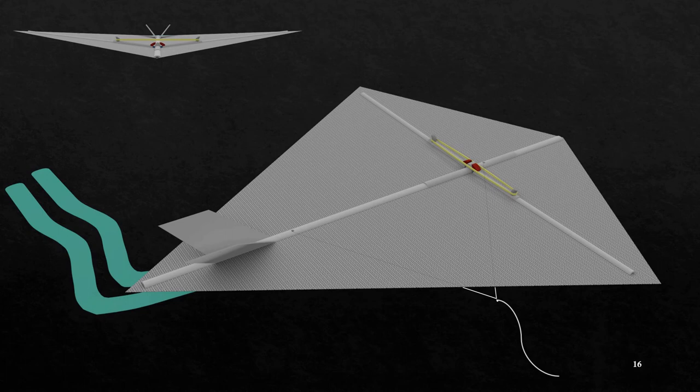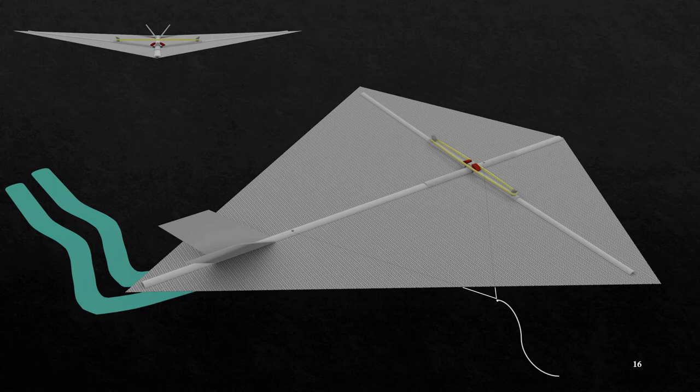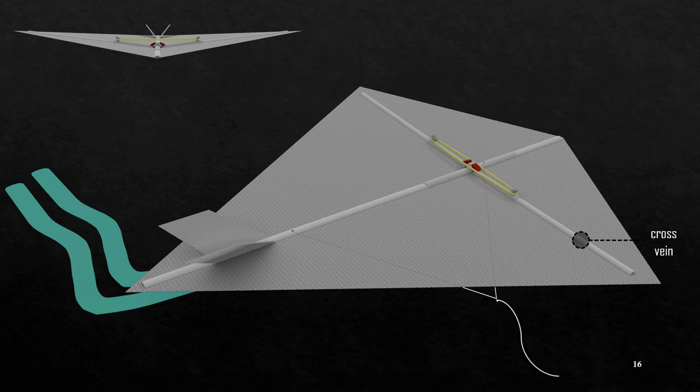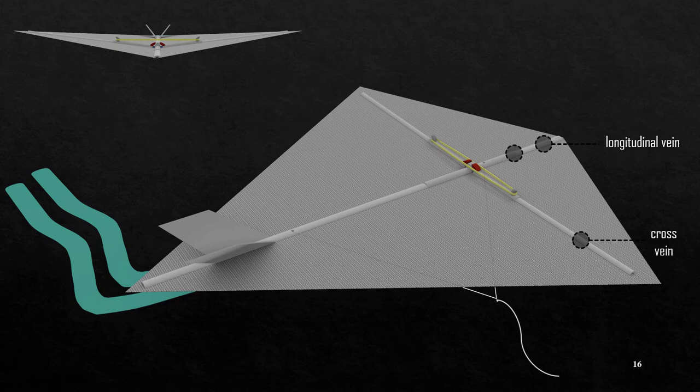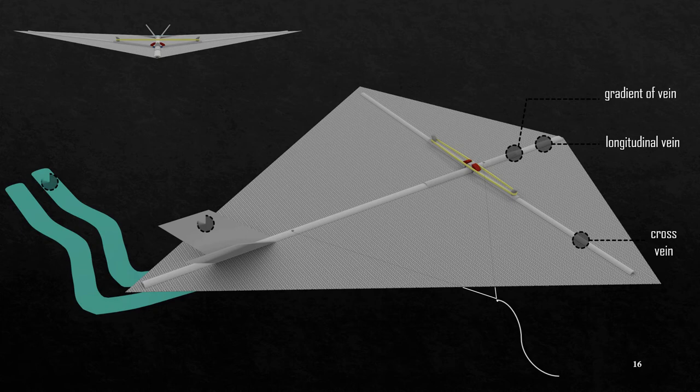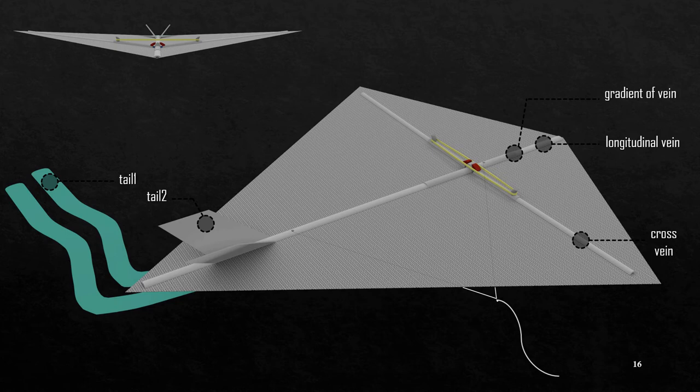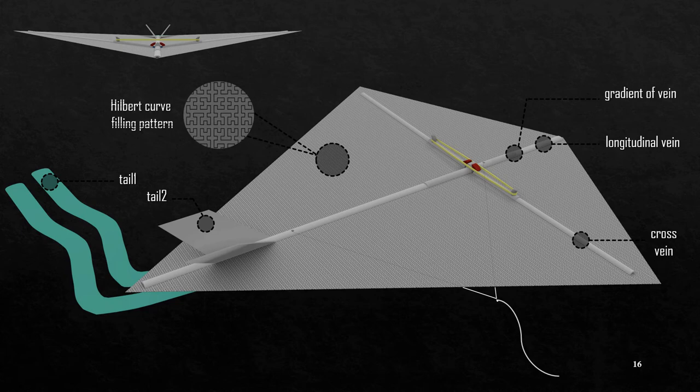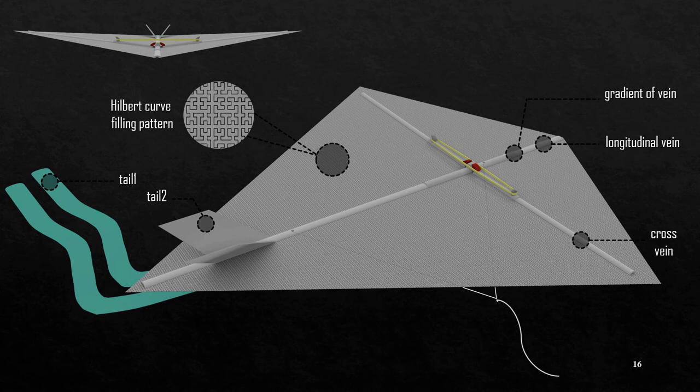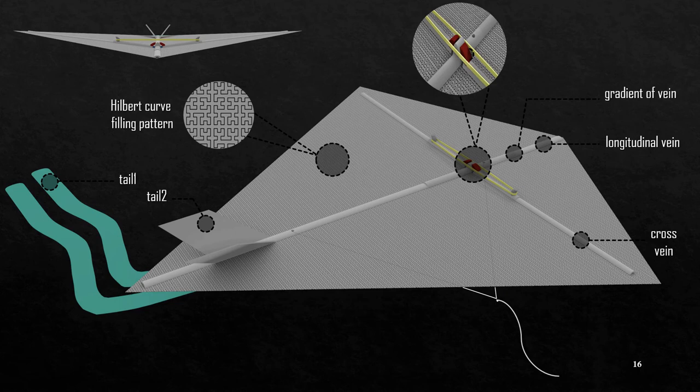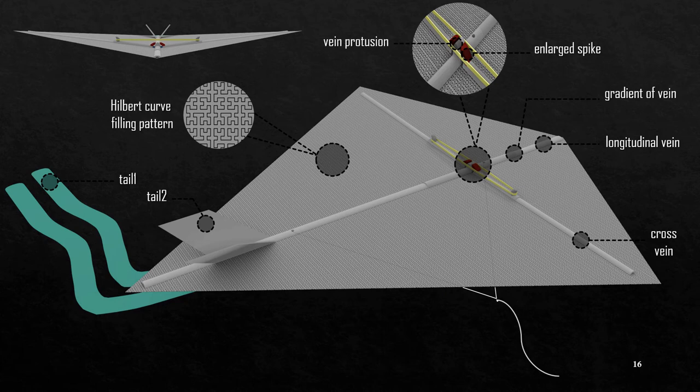This is a perspective view of our 3D printed kite, showing its different components such as cross vane, longitudinal vane, a gradient of the vane in order to reduce the weight of the structure, tails to increase the drag force of the kite and consequently increase the stability of the kite during flight, a Hilbert curve-filling pattern to reinforce the structure of the membrane against fractures.